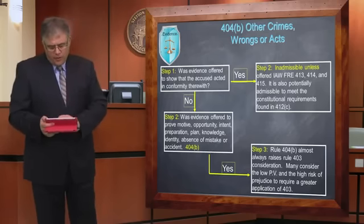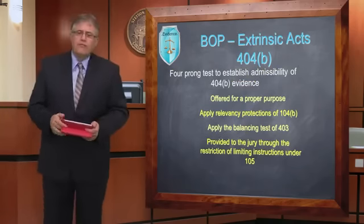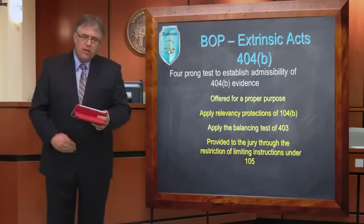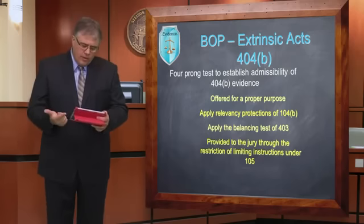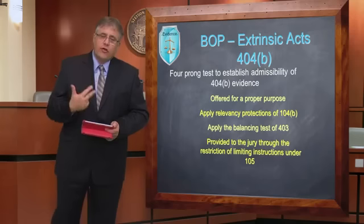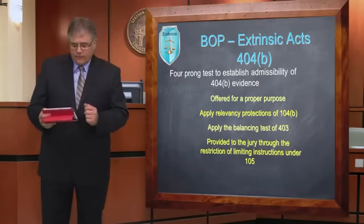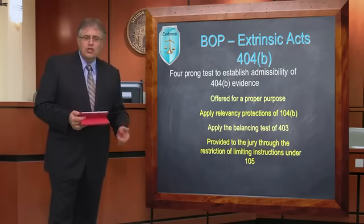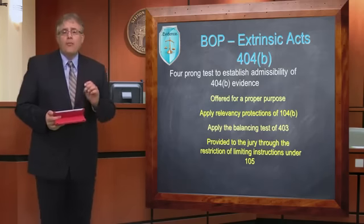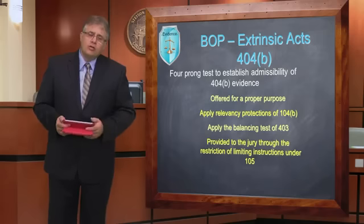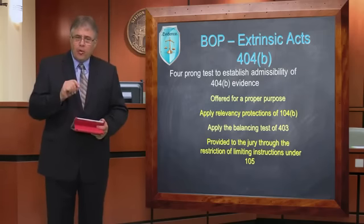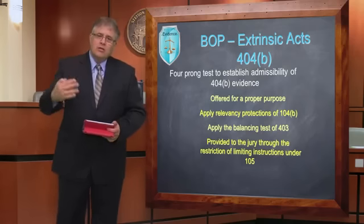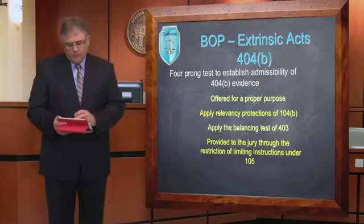What's the burden of proof for 404(B)? There's a four-pronged test — four questions that must be asked and answered to the court's satisfaction before admitting 404(B) evidence. It's got to be for a proper purpose, not propensity, but one of the non-exhaustive factors. I have to apply the relevancy protections from Federal Rule 104. I have to do the balancing test from 403. And finally, when I give this evidence to the jury, I should provide a limiting instruction as to the proper purpose for the use of this evidence in accordance with Federal Rule 105. All four steps must be properly followed to ensure that when admitted, this evidence won't create an issue of potential error at the appellate level.